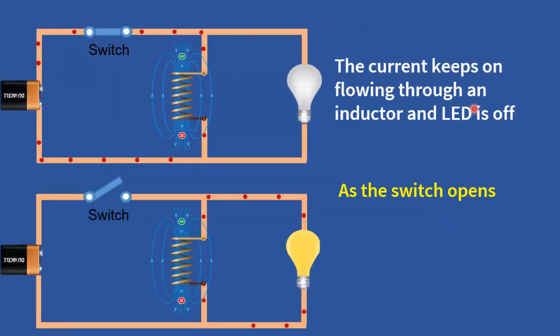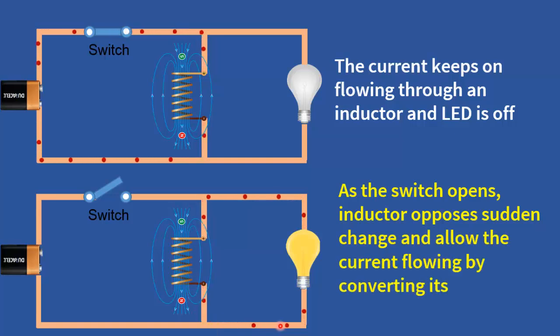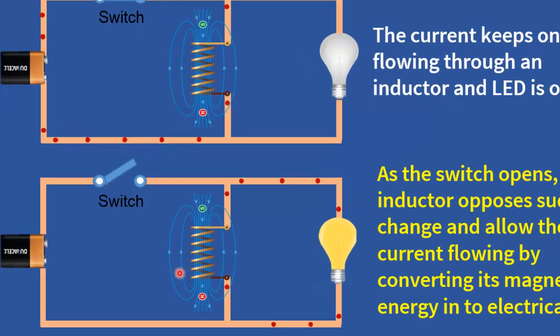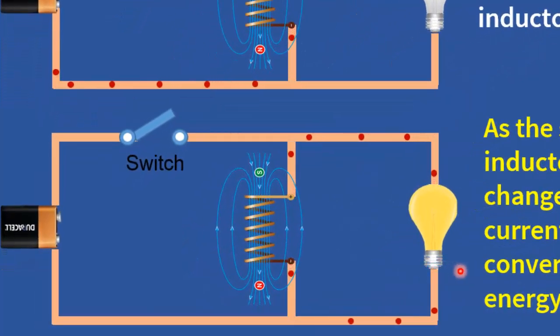Now as we open the switch, the inductor, having stored energy in its magnetic field while current was flowing, will attempt to maintain the current flow when the circuit is suddenly opened. As a result, it will convert its magnetic field into electricity and turn on the LED bulb. As the inductor discharges, the LED will turn off.